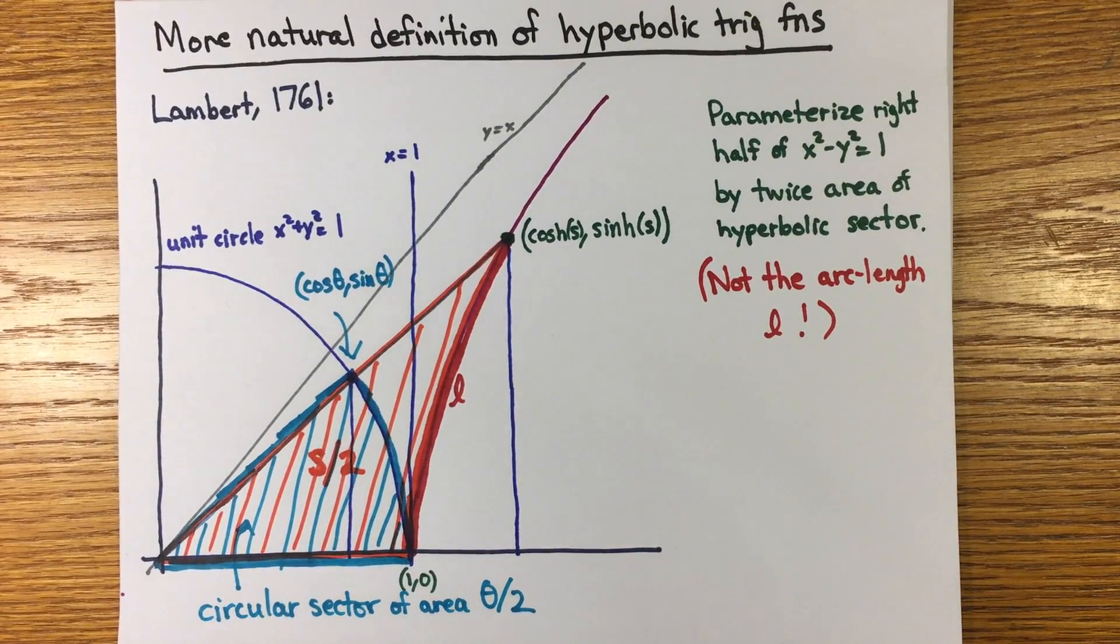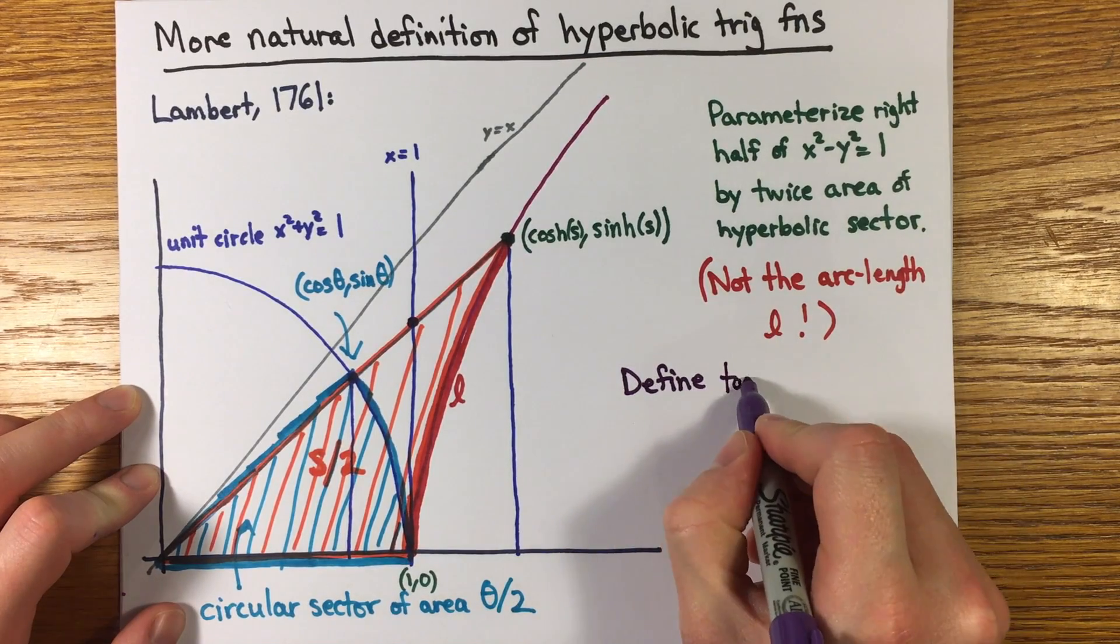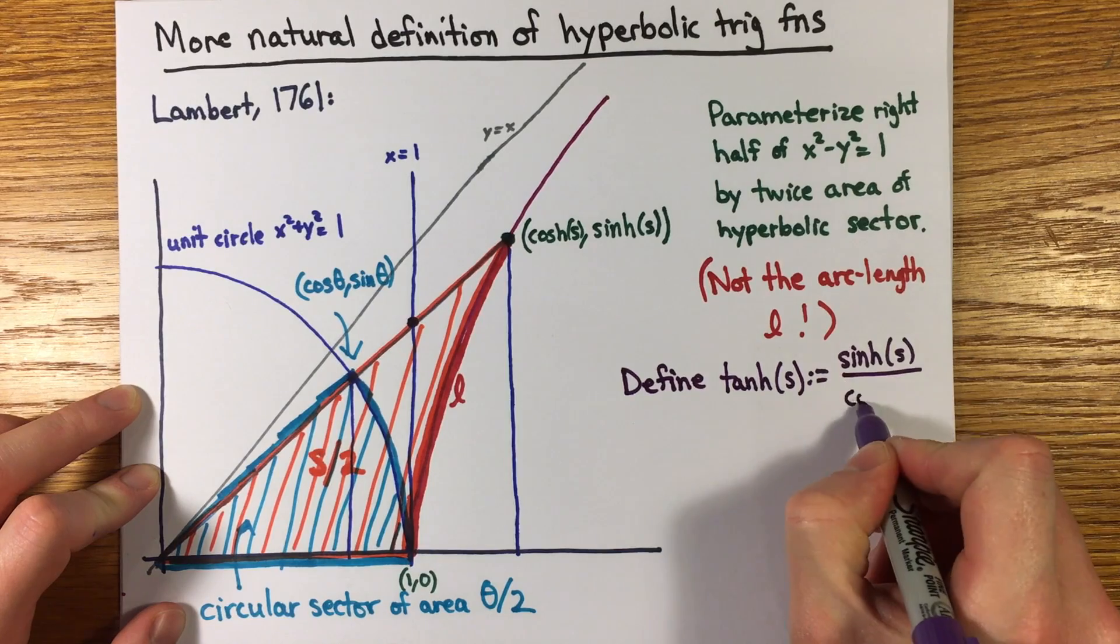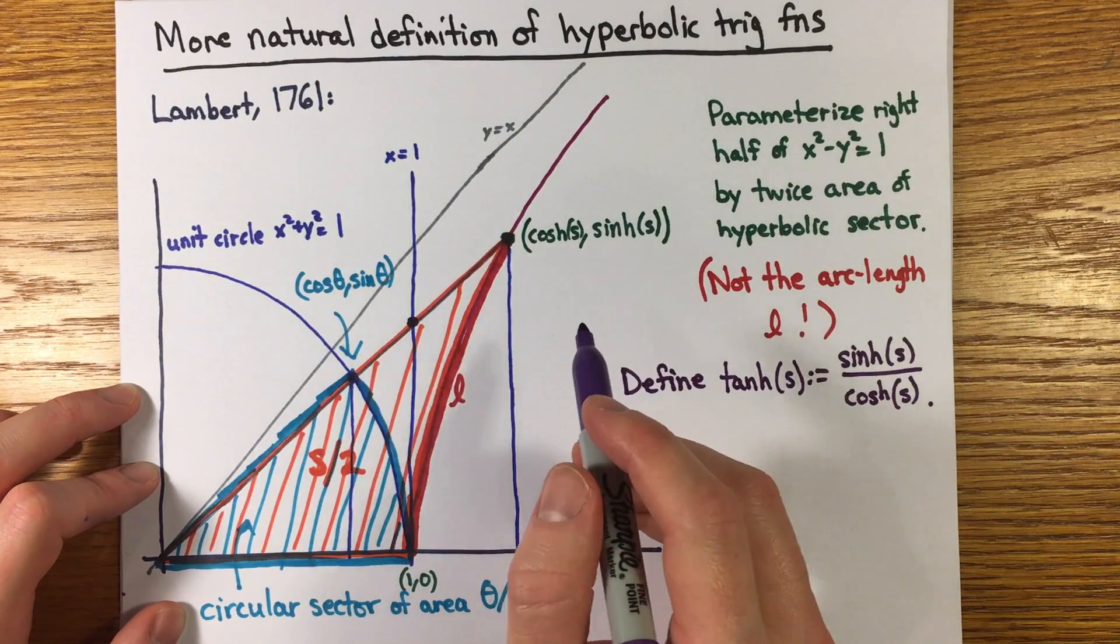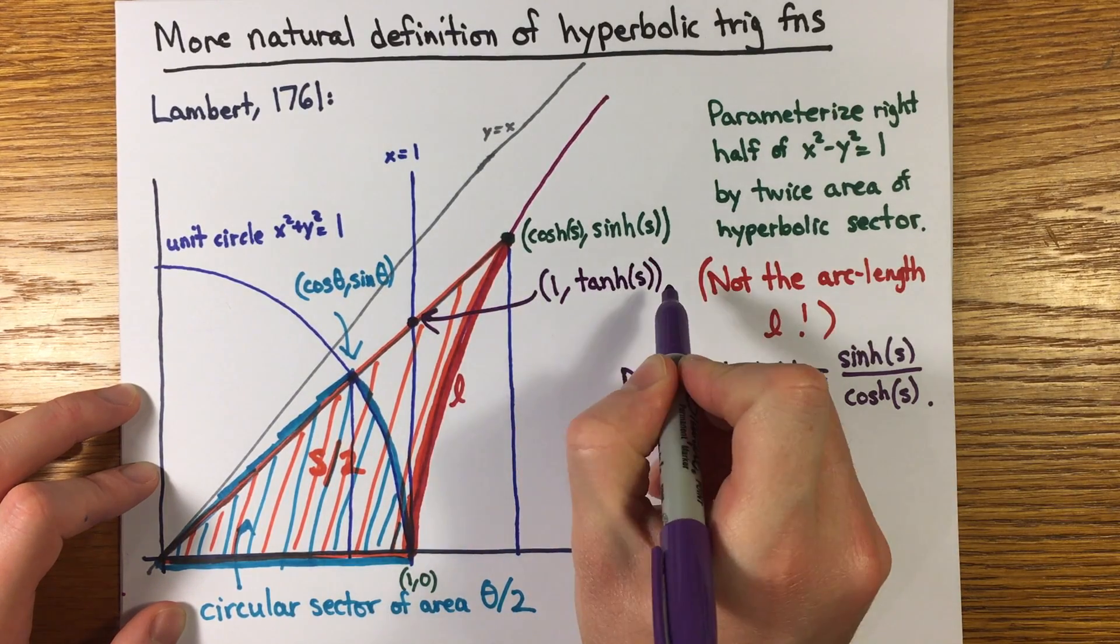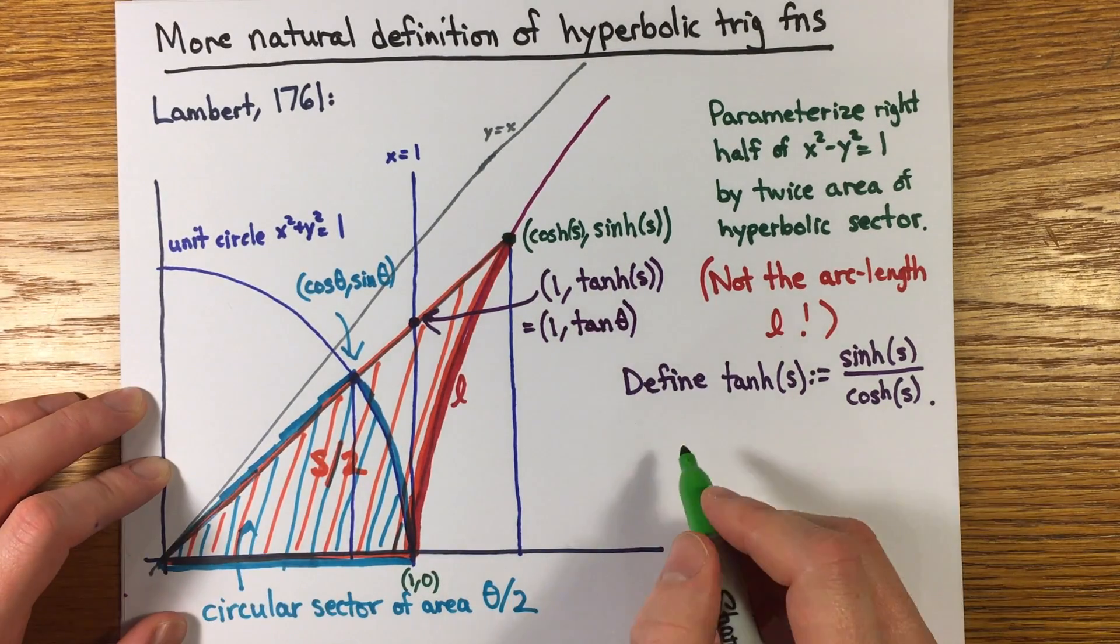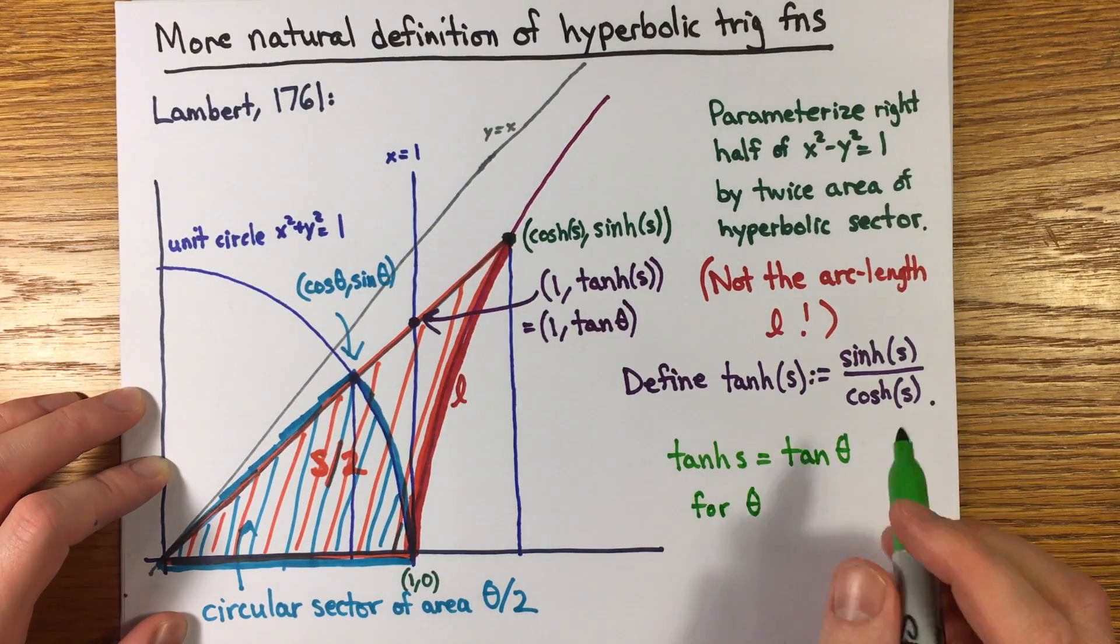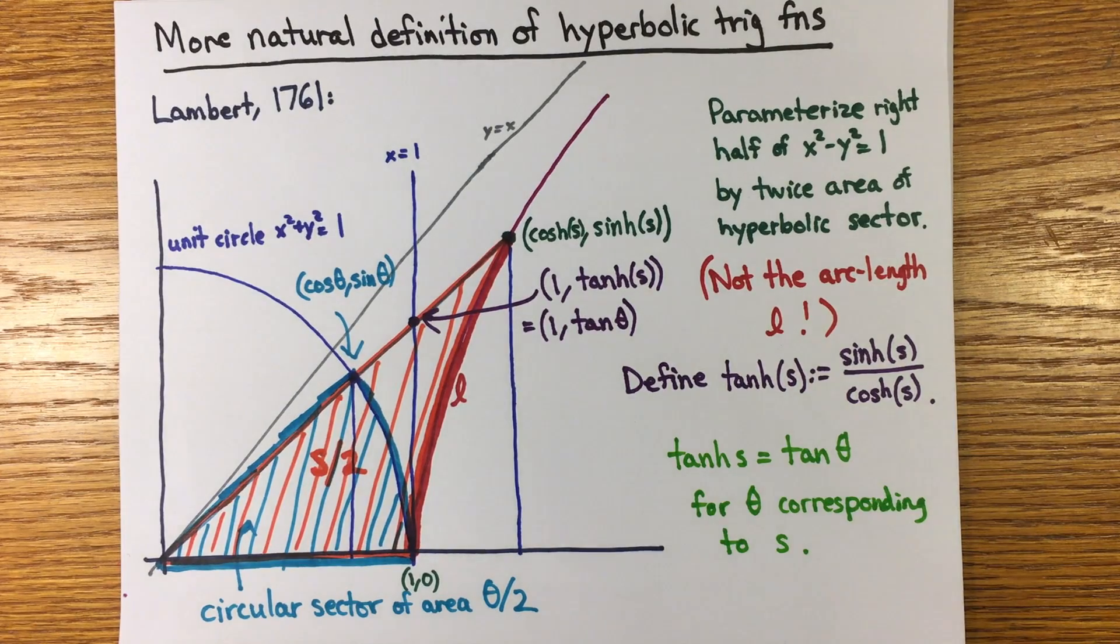The diagram shows the relationship between the ordinary trig functions sine and cosine and the hyperbolic ones. So let's define the hyperbolic tangent or tanh of s to be the ratio sinh of s over cosh of s. And that's the height at which the ray from the origin to the point cosh s sinh s hits the line x equals one. But at the same time, that height is equal to tangent of theta for the angle theta of that ray. That relationship tan theta equals tanh of s is the key relationship we're going to exploit.